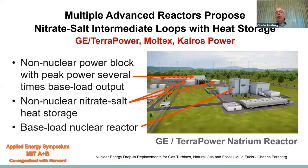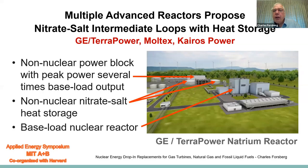Multiple advanced reactors propose using nitrate salt intermediate loops with heat storage. This shows the GE TerraPower system: way in the back is the power block, in front are the hot and cold nitrate storage tanks, and at the front is the actual reactor. It's a different site layout with a different set of requirements for the power station.